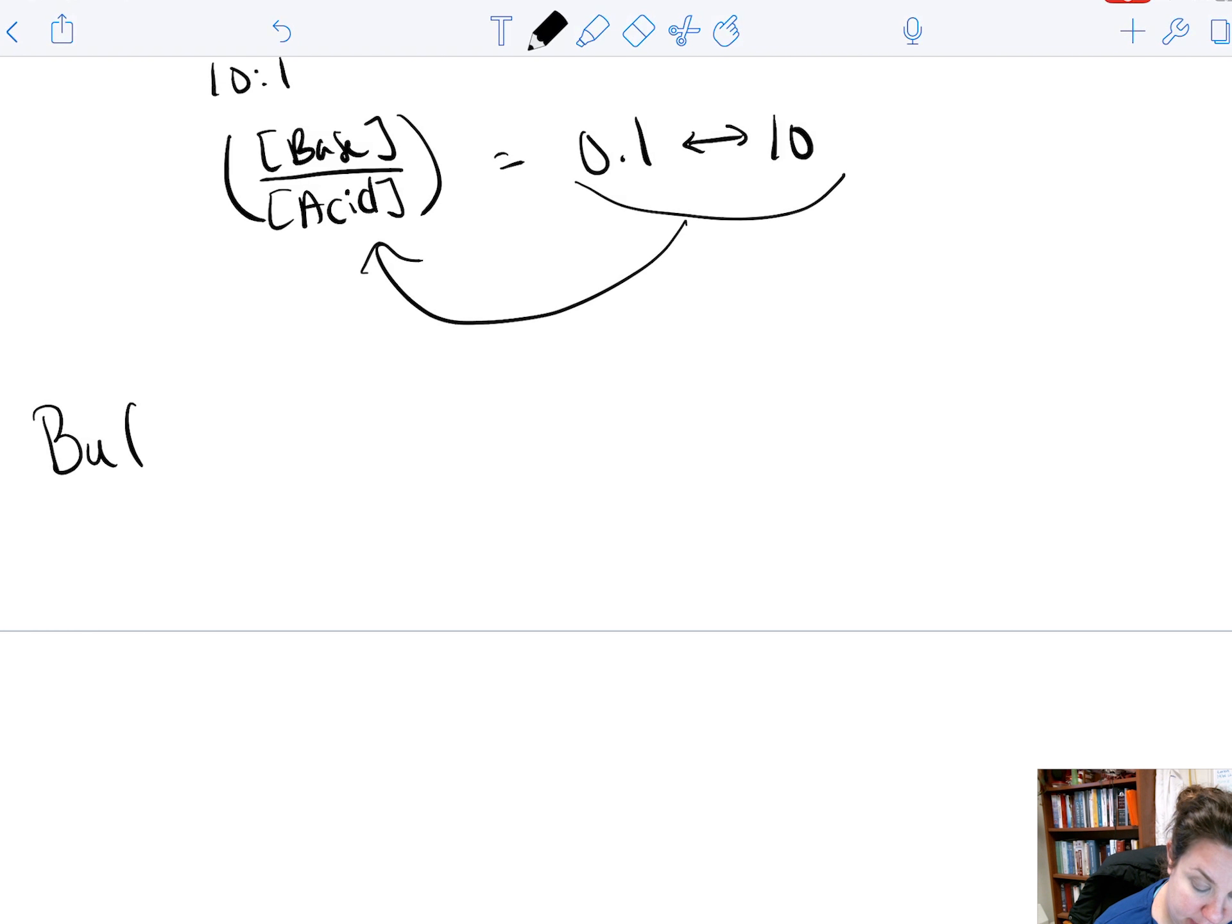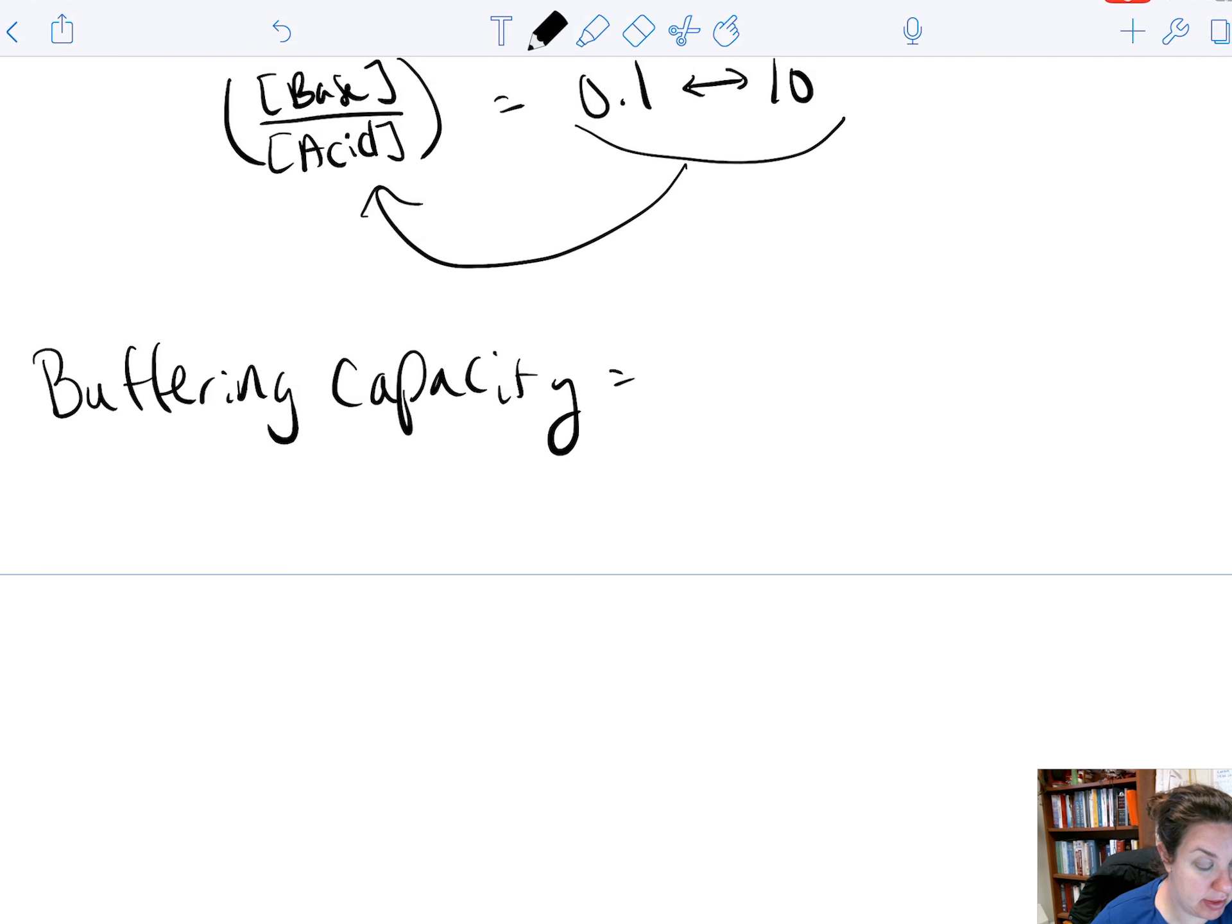Okay, last thing in this lecture that we are going to be looking at is buffering capacity. Or buffer capacity. This is the amount of strong acid or strong base that can be added before our solution no longer acts as a buffer.